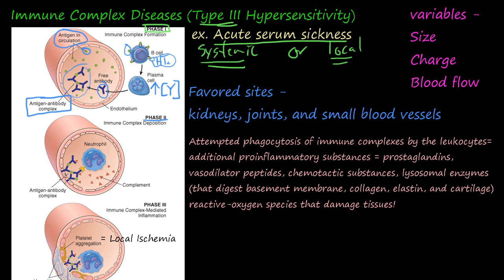In phase two, the antibody-antigen complex inserts and embeds itself into the blood vessel wall. A neutrophil comes along, recognizes the antibodies bound to antigens, and begins destroying this complex. Complement also gets activated, further recruiting and activating these neutrophils and white blood cells. That is the immune complex deposition phase.